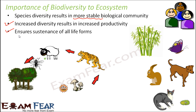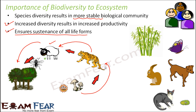Biodiversity ensures the sustenance of all life forms, which is easy to understand through the food chain. For example: a goat feeds on plants, a tiger feeds on the goat, and when the tiger dies, microorganisms help in its decomposition. Each organism is dependent on another. Now if all species of tigers suddenly become extinct, this food chain gets affected — those who fed on tigers are affected, and the organisms that tigers were eating are also affected. A decrease in biodiversity is not a good symptom, because more biodiversity results in a more stable ecosystem.